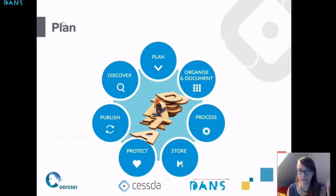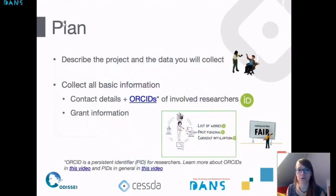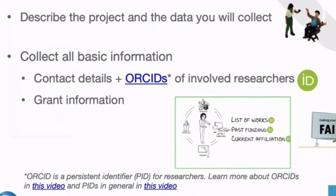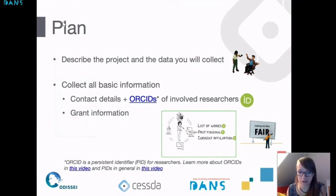Looking again at the life cycle — the first chapter of the Data Management Expert Guide is about planning your research. In the planning of your research you describe your project and think about the data you will collect. In terms of a data management plan in this phase, you would collect all basic information — what is your project about, what kind of data are you collecting, contact details of involved researchers, and basic project information. You can start already by collecting persistent identifiers, in particular ORCIDs of the involved researchers.